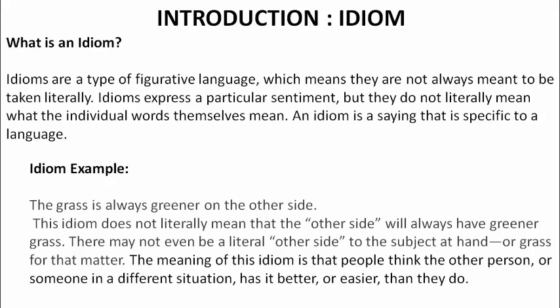The idiom 'raining cats and dogs' means that it is raining very heavily — the actual meaning is not about cats or dogs at all. Each idiom can never be taken in the literal sense of the words. The idiom expresses a particular sentiment; it conveys a specific meaning through the given words.